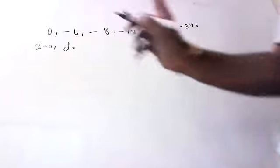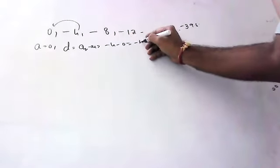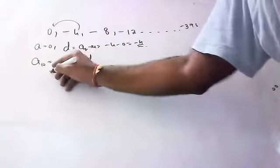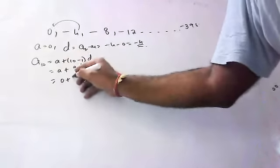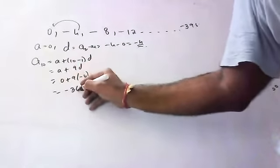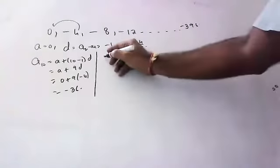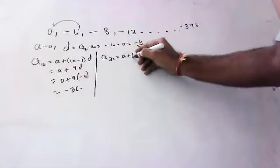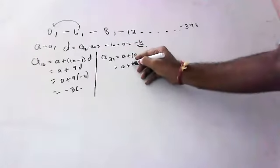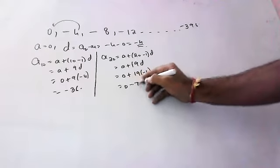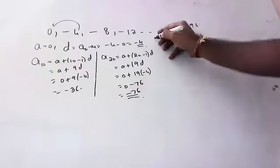What is a here? a = 0. d is always second minus first: −4 − 0 = −4. Common difference is −4. For the 10th term: a + 9d = 0 + 9 × (−4) = −36. So the 10th term is −36. For the 20th term: a + 19d = 0 + 19 × (−4) = −76. So the 20th term is −76.